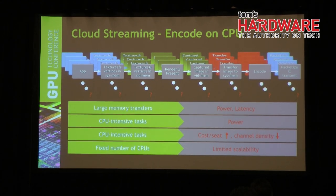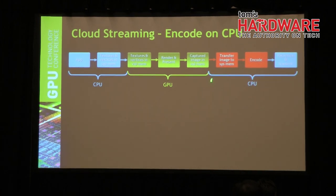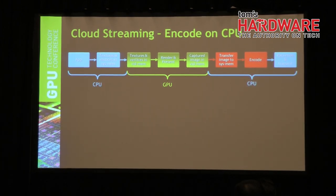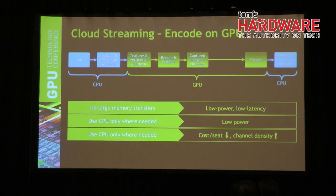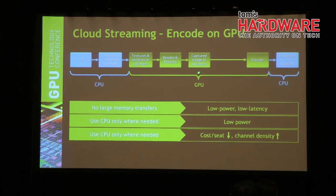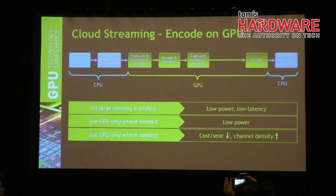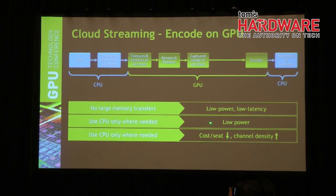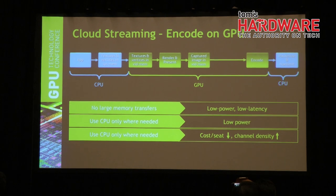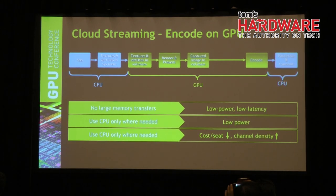The solution is to get rid of the transfer to system memory and directly transfer the captured image to the encoder for encoding. That's where all the benefits come from: no power overhead, no latency, no large memory transfers. Low power because you use the CPU only when needed and use fixed-function in-vehicle hardware which is very low power. This drives cost-per-seat down and channel density up.